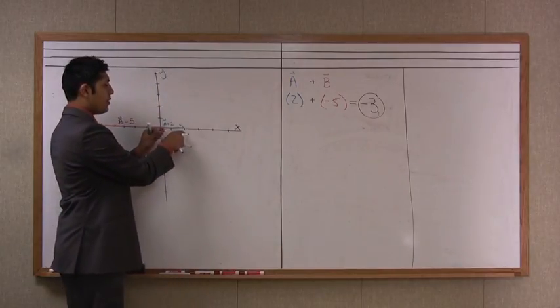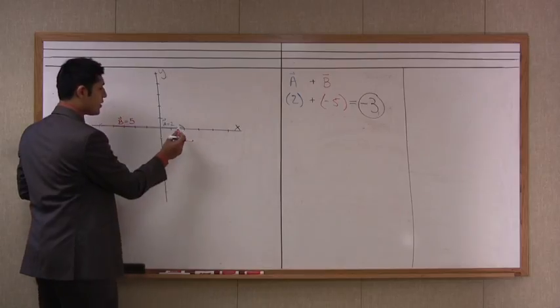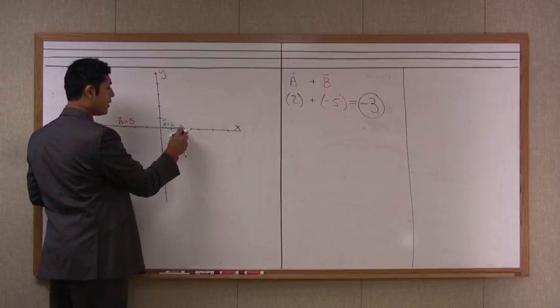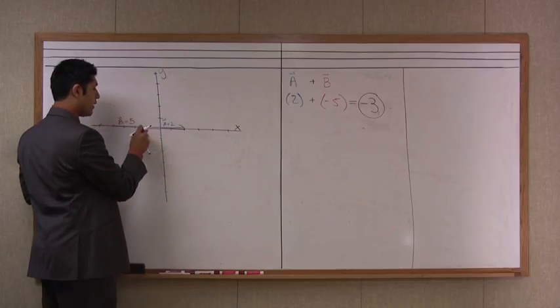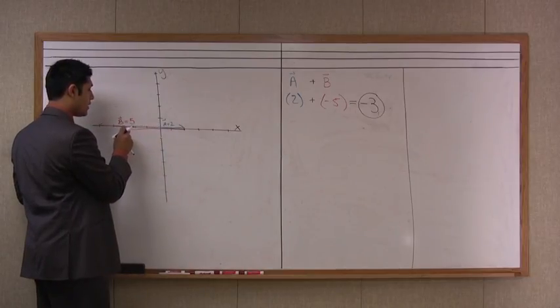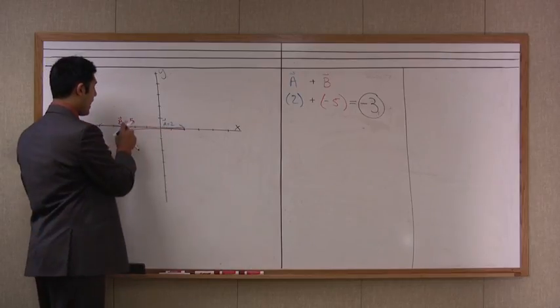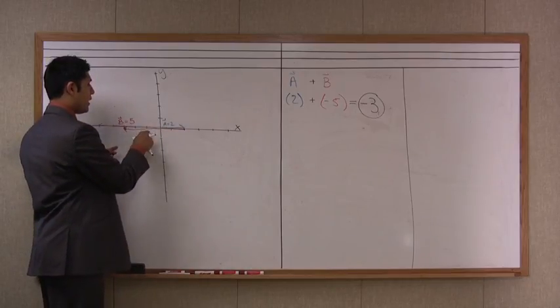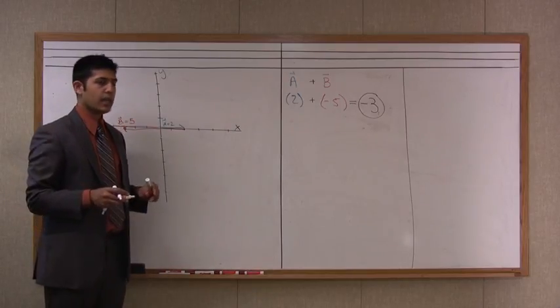So we have vector a going two units to the right and I'm going to draw a new vector b in red starting from the head of it and going backwards one, two, three, four, five units. And so as I do the head-to-tail unit I can see that my end point here is at negative one, negative two, and negative three on the x-axis.